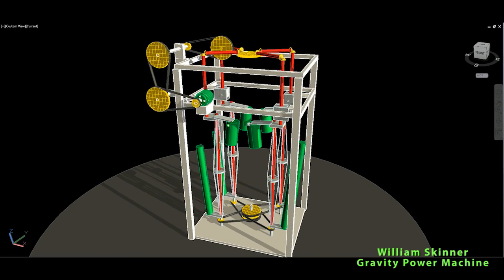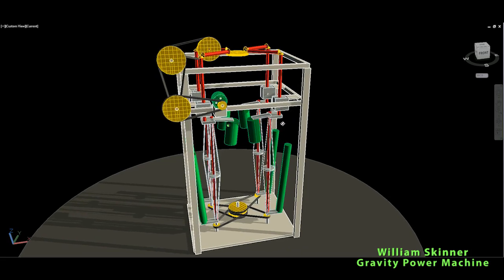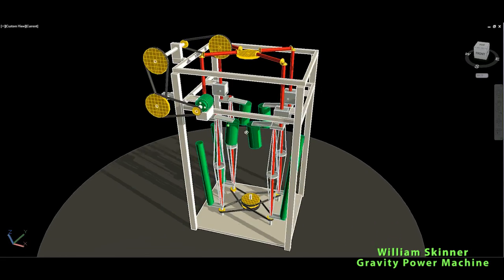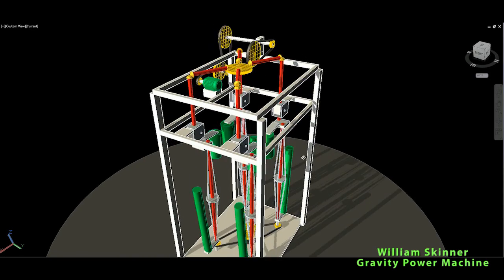Let me describe what it is. This is the William Skinner gravity power machine. This is again one gravity power machine, so basically we use gravity to increase output power of the whole system.